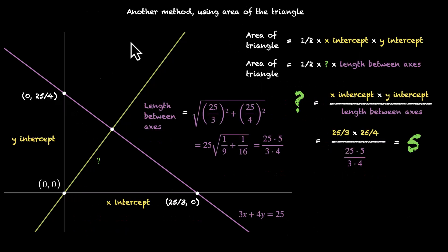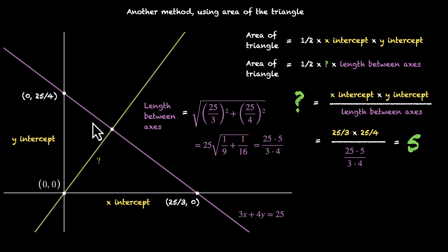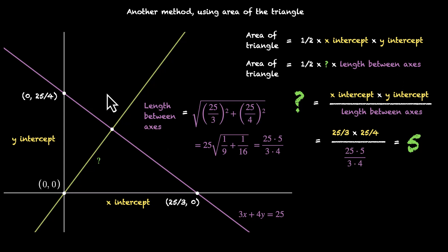Then we try doing the same thing using a different method — finding the area of this triangle. It's a right-angled triangle, so the area is half times x-intercept times y-intercept. But it's also equal to half this length times the length between axes. We can figure out x and y-intercept using the equation, and the length between axes using the distance formula. Plugging things back, we find the distance of this line from the origin.